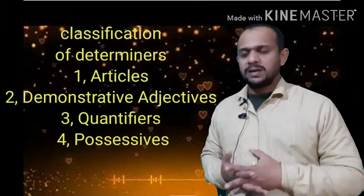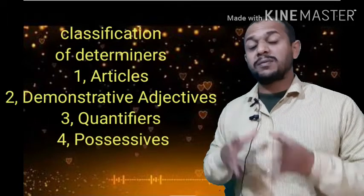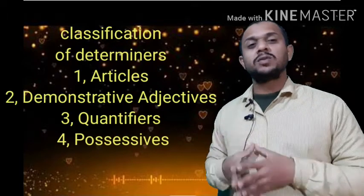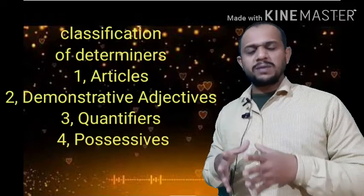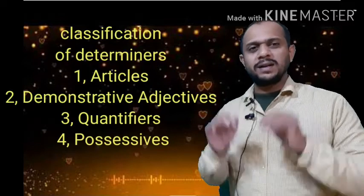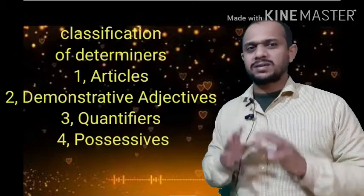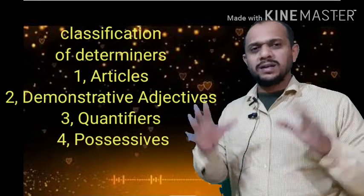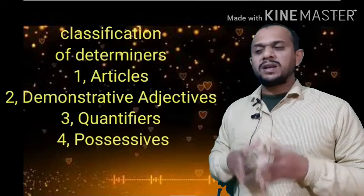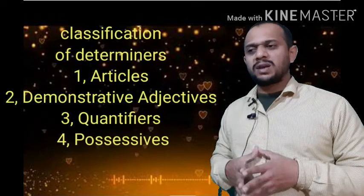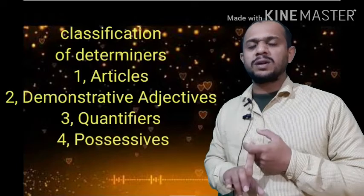Classification recap: number one, articles — definite article 'the,' indefinite article 'a' or 'an.' Number two, demonstrative adjectives: this, that, these, those. Number three, quantifiers — which indicate quantity.